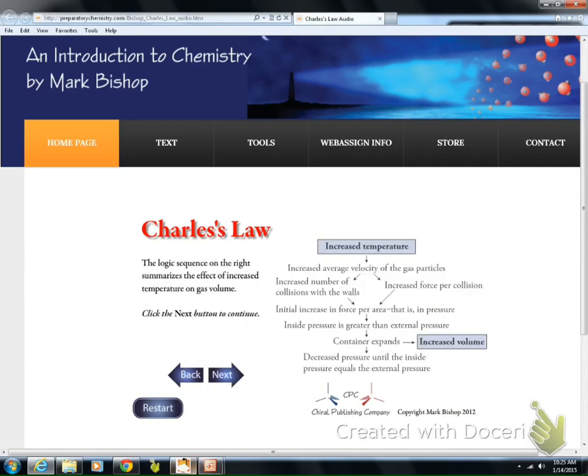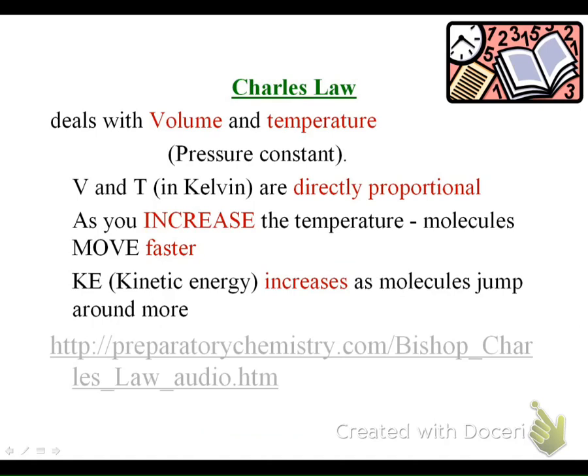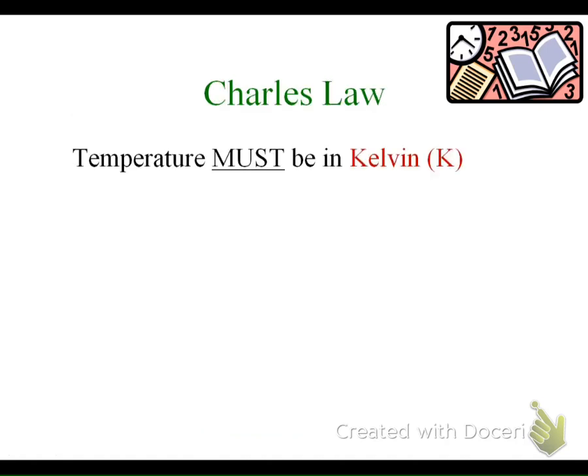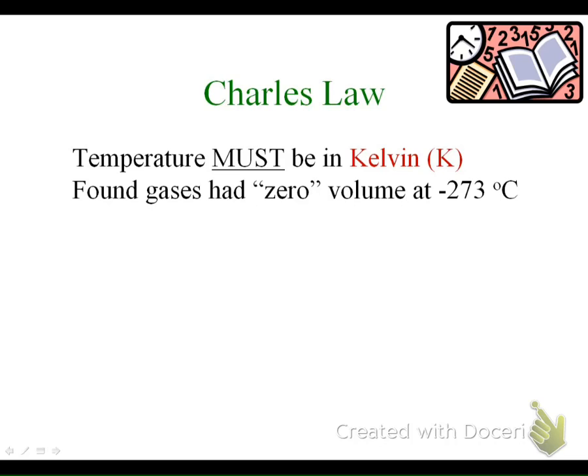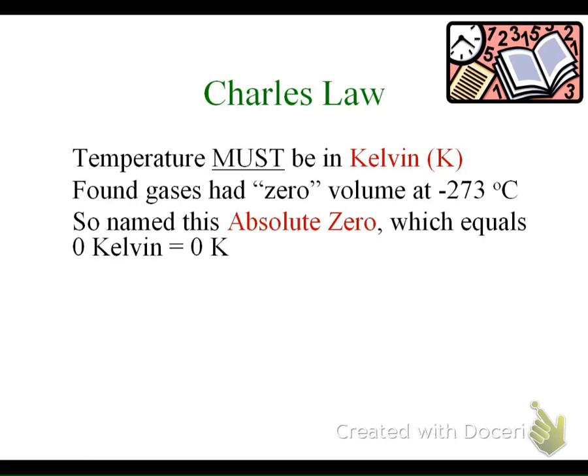So let's go back to the PowerPoint slides. Temperature must be in Kelvin. The reason is that gases were found to have a zero volume at negative 273 degrees Celsius — essentially the molecules were moving so slowly it was almost like they had zero volume. This was named absolute zero, and it equals zero Kelvin. So when we do our math for Charles' Law, and really any of our gas laws, we need to make sure our math is in Kelvin.